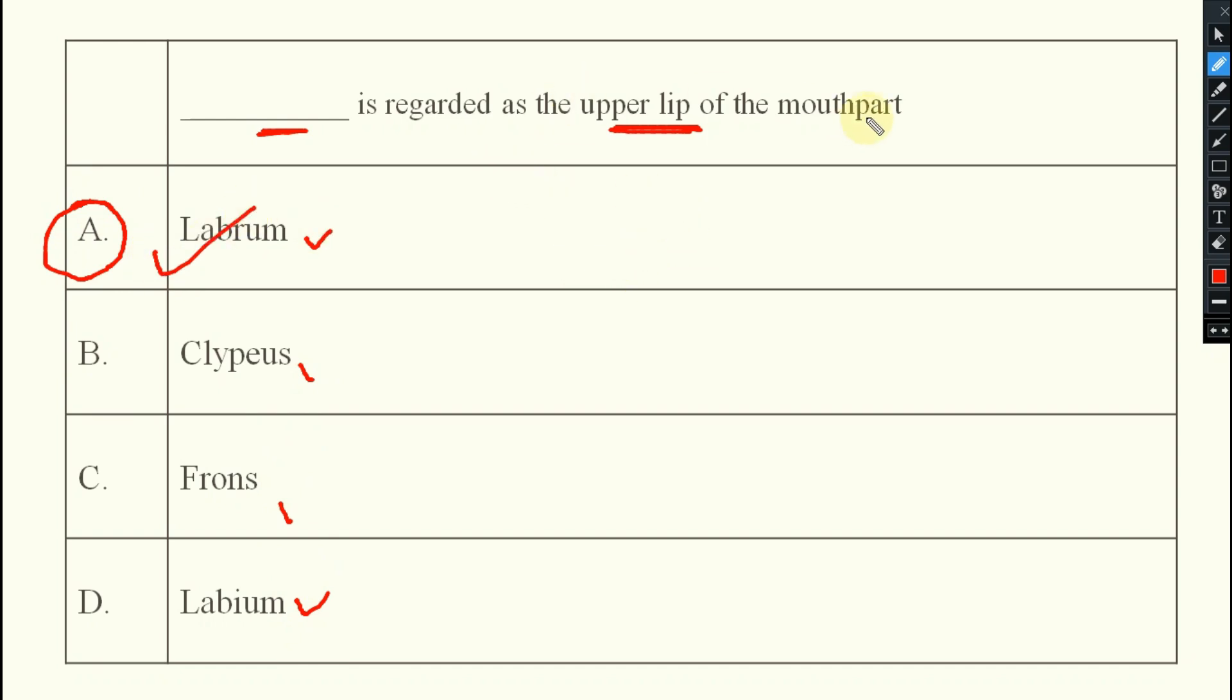You see, we cannot discuss all of the descriptive things here in this MCQ video. So if you want to know about all of these things, what is labrum, what is clypeus, what is frons, what is labium, a separate video I have created. It is there in my channel, you can go and watch that one. Different parts of a mouth or mouthparts of insect. The link you can get in the description box. You can go through that and you can get the information. Here quickly we will complete a few more questions.